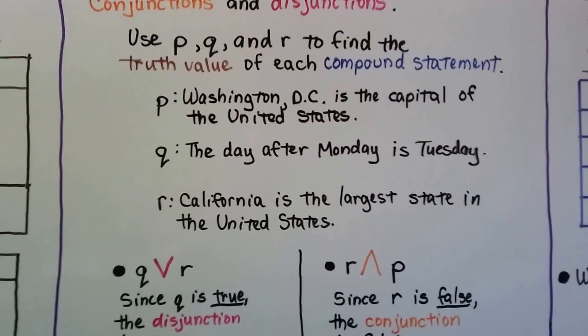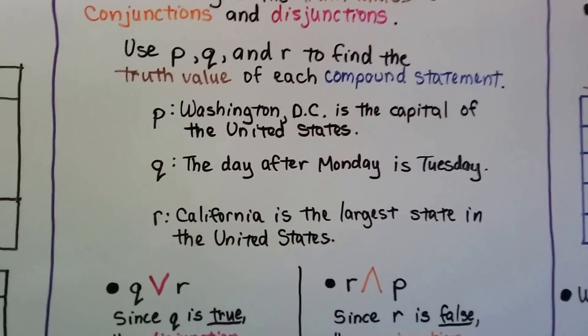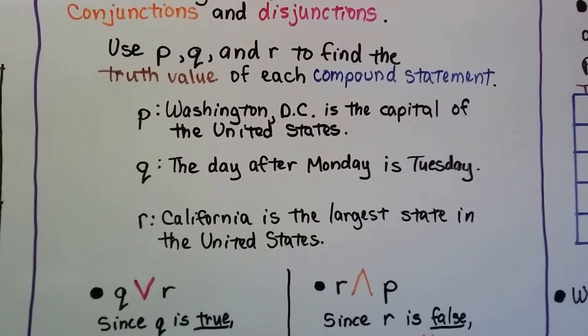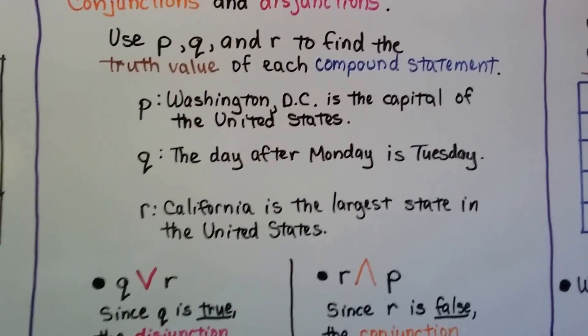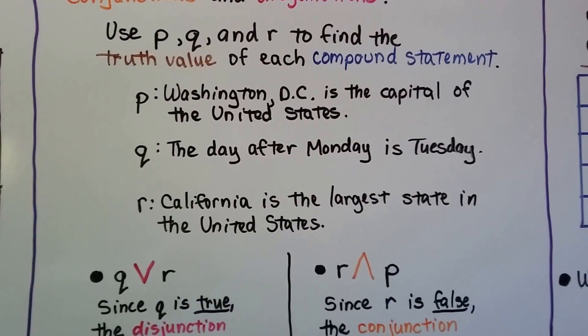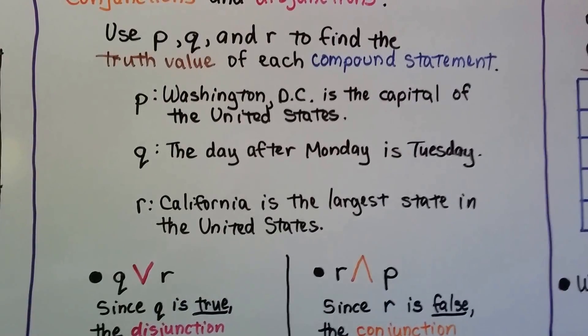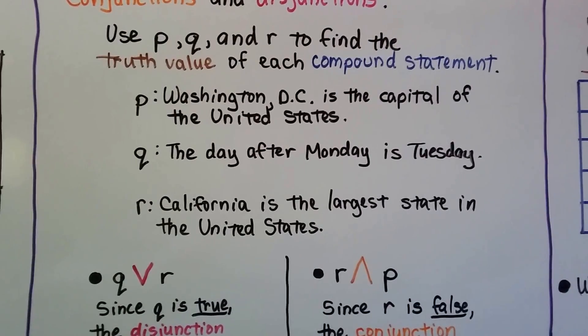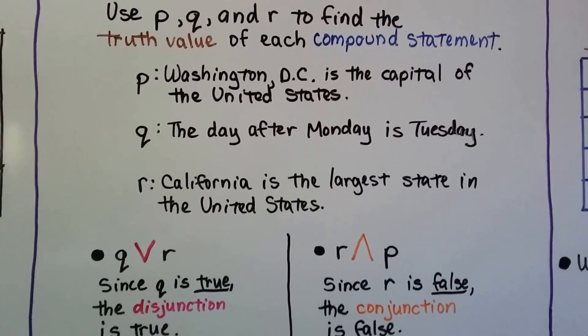So P says Washington, D.C. is the capital of the United States. Q says the day after Monday is Tuesday. Well, so far, both of those are true. R says California is the largest state in the United States. If you know your U.S. geography, you know that's false. So P and Q are true and R is false.